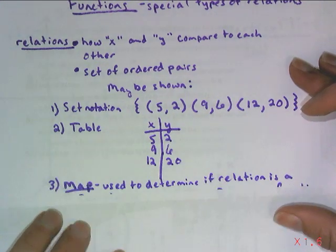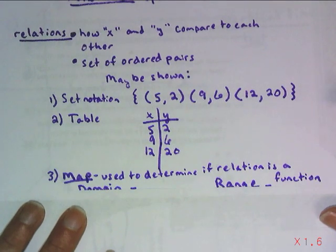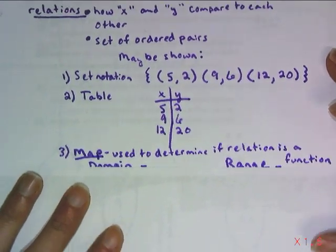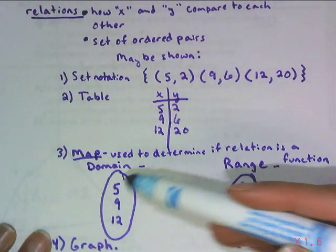The new thing for today is what is called a map. And the whole reason we use maps is to determine if a relation is a function. And here's an example of a map. So you have the domain and you have a range. You can use ovals, you can use circles.